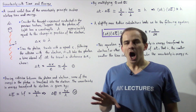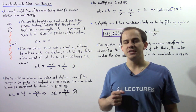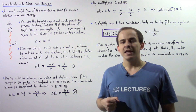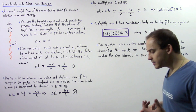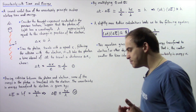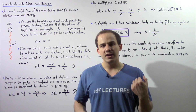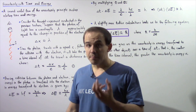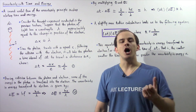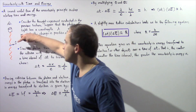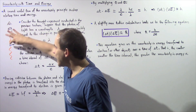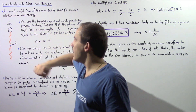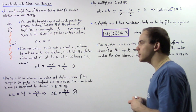A second useful form of Heisenberg's uncertainty principle involves relating the time and energy of that object. Let's conduct the same thought experiment that we conducted in the previous lecture. We want to use a powerful light microscope to determine the position of an electron. This is our electron, this is the light wave that our microscope uses, this is the scope of our microscope, and this is the eye of the observer.